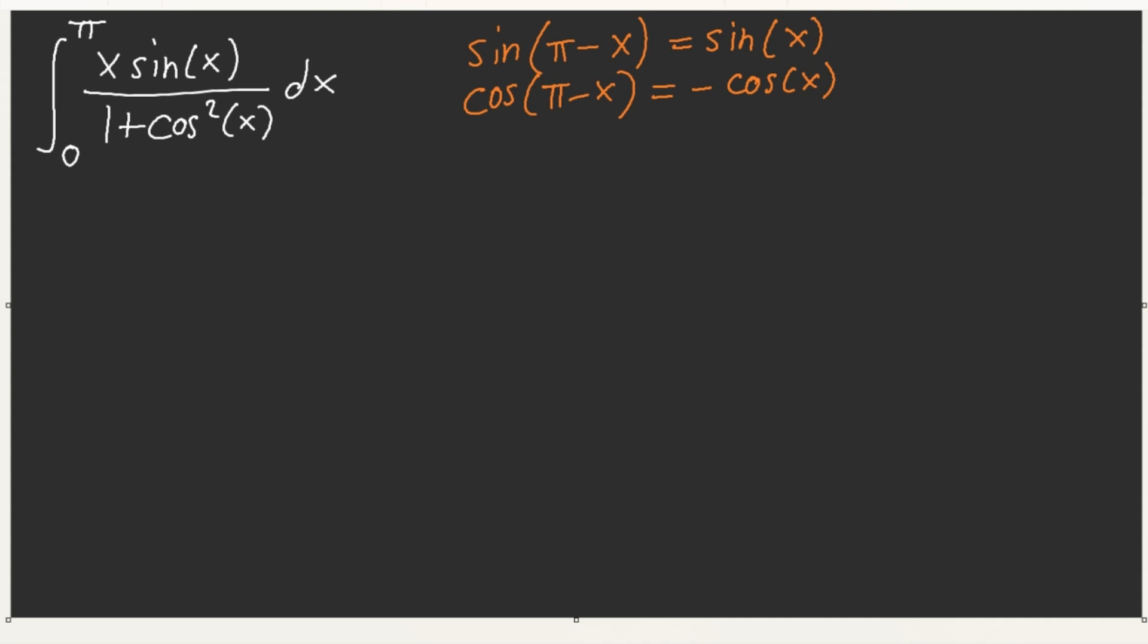So, what's going to happen is when we perform u equals pi minus x, here's what's going to happen. This x becomes pi minus x. And then sine of x stays the same. And then 1 plus cosine squared stays the same. Without that square, this would be minus, which would not help at all.